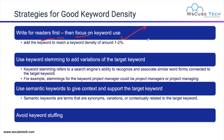Keyword stemming refers to a search engine's ability to recognize and associate similar words — what you can call semantic words — connected to the targeted keyword. For example, stemming of the keyword 'project manager' could be 'project managers' or 'project managing.' Similarly, if you are using 'online marketing' as your primary keyword, you can write 'internet marketing' or 'digital marketing' in its place to maintain your keyword density.